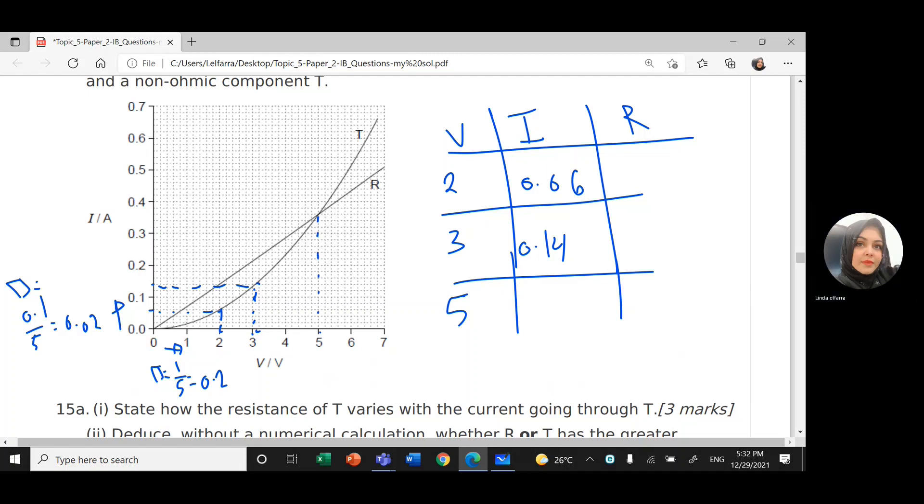Similarly, at 5, go and read the value. So this value is 0.36.